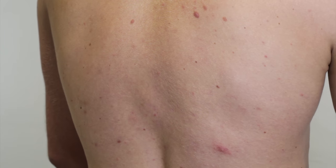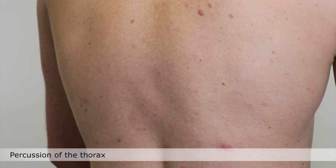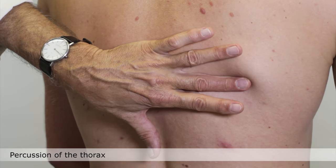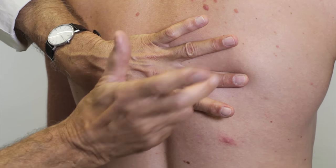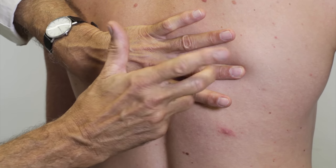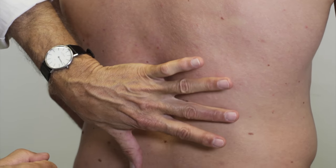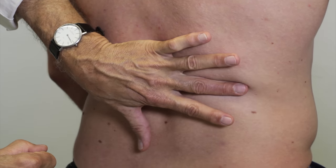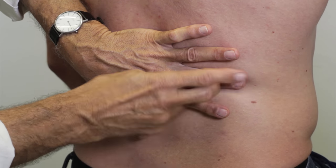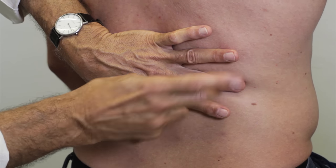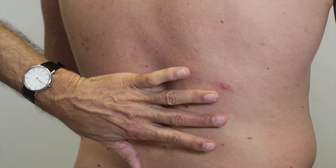Now begins the percussion of the lungs. The examiner places one middle finger firmly on the patient's chest and strikes it with the middle finger of the other hand. Physiologically, the air-filled pulmonary tissue should produce a resonant sound. Below the level of the lungs, percussion produces a dull sound.